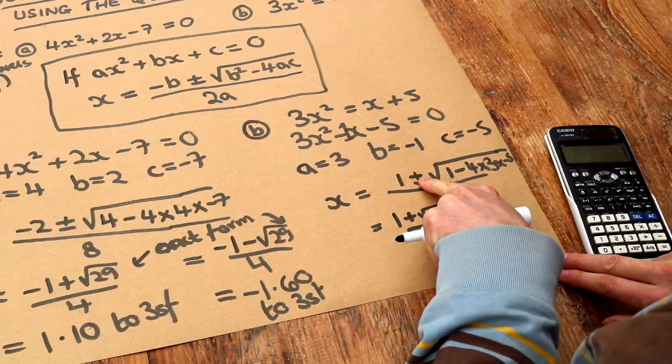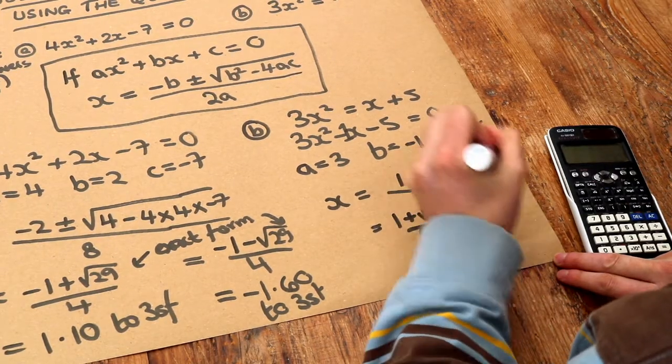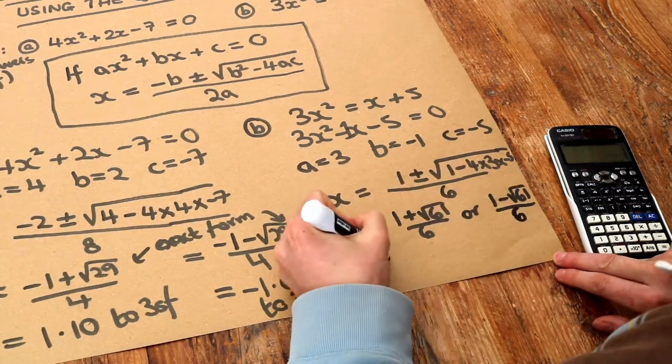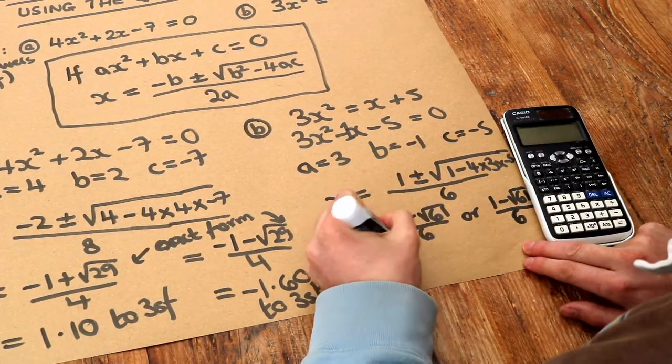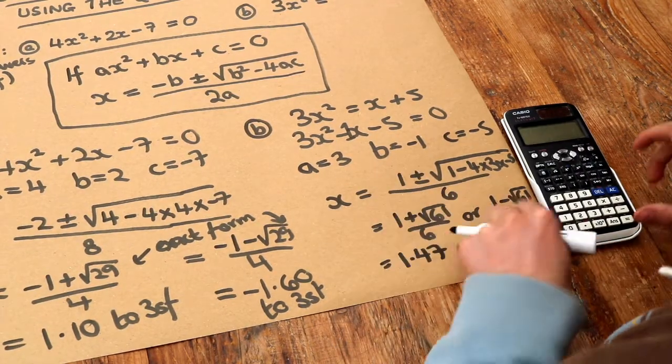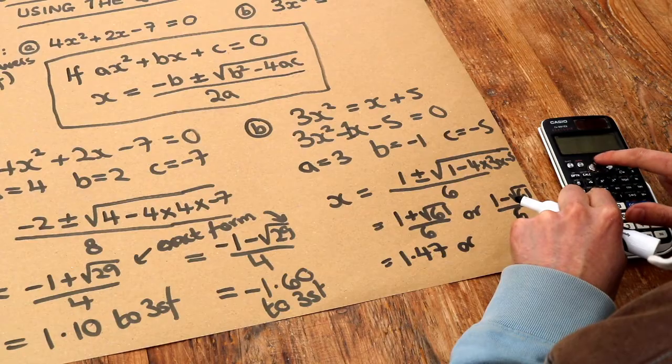Or it's going to give you the same but with a minus here instead. So you get 1 minus root 61 over 6 as well. And if you press the SD key we get 1.47 to 3 significant figures.